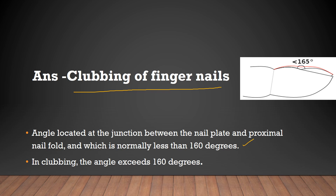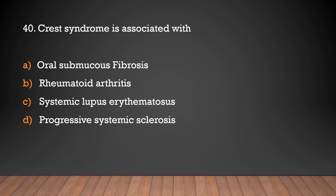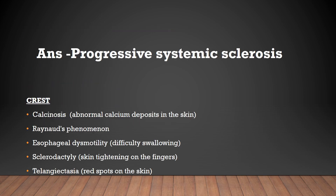CREST syndrome is associated with oral submucous fibrosis, rheumatoid arthritis, systemic lupus erythematosus, or progressive systemic sclerosis? The answer is progressive systemic sclerosis. In CREST syndrome, each letter stands for features of the disease: Calcinosis, Raynaud's Phenomenon, Esophageal Dysmotility, Sclerodactyly, and Telangiectasia.